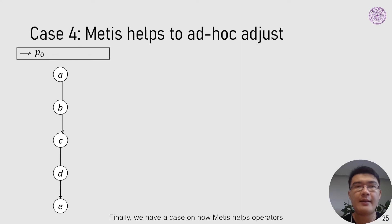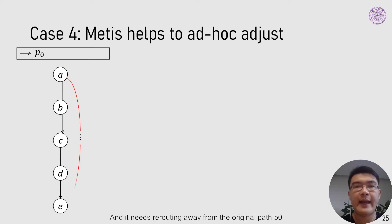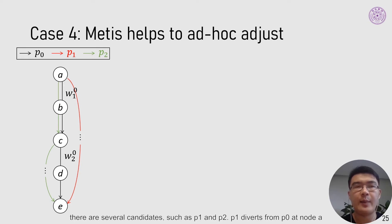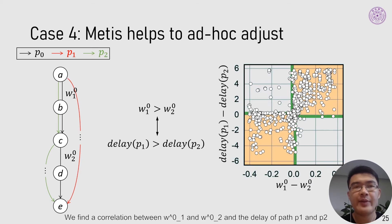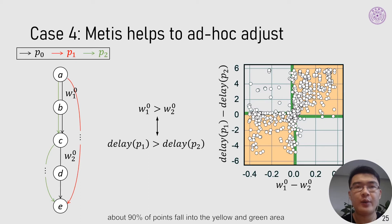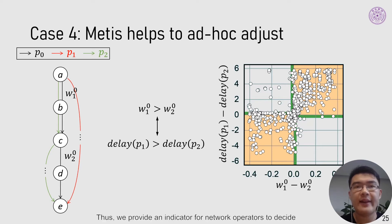Finally, we have a case on how Metis helps operators ad hoc adjust a routing system. Suppose a flow from node A to node E needs rerouting away from original path P0, with candidates P1 and P2. W01 is the significance of the connection between P0 and link A-to-B. We find a correlation between W01 and W02 and the delay of paths P1 and P2. About 90% of points fall into the expected area, demonstrating the correlation. This provides an indicator for operators to decide which path to reroute without estimating end-to-end path latency.